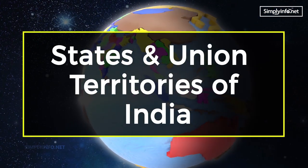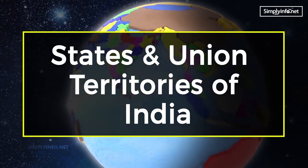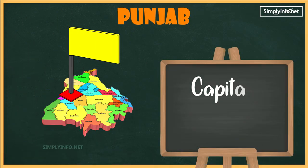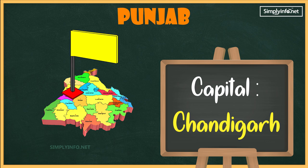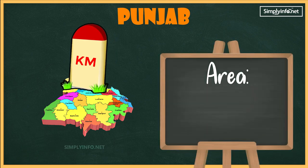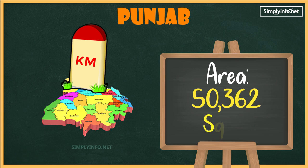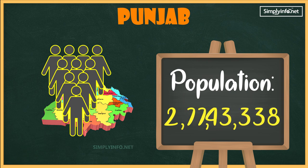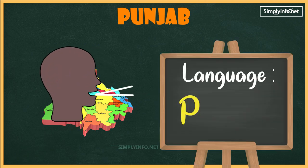States and union territories of India. Punjab: capital Chandigarh. Area 50,362 square kilometers. Population 2 crore 77 lakhs 43,338 people. Language: Punjabi.